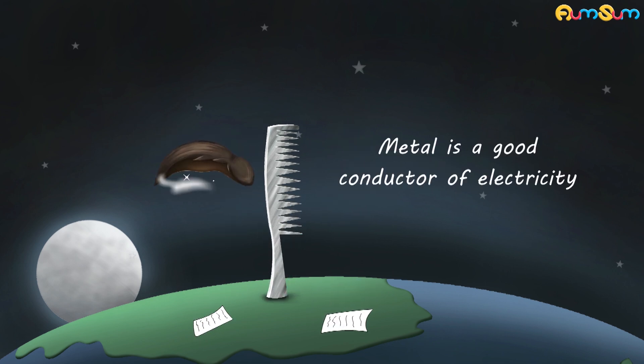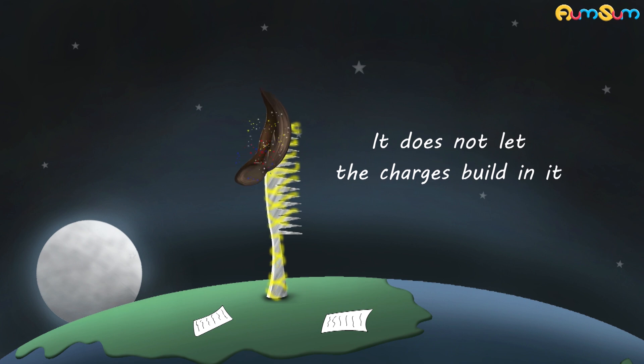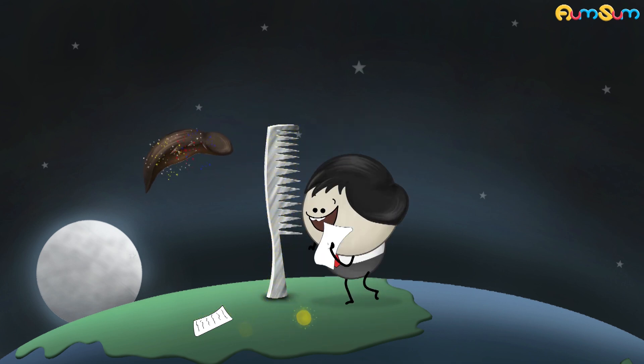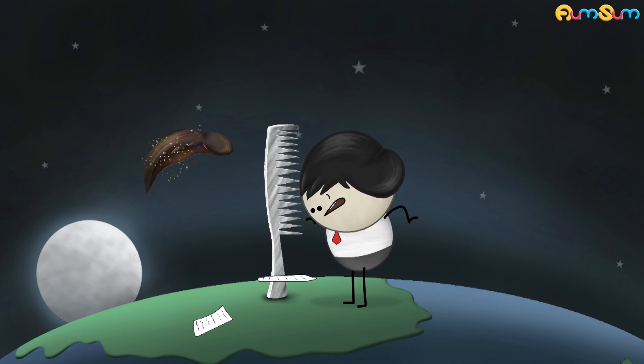However, metal is a good conductor of electricity. It does not let the charges build in it. It allows the electric charges to flow through it onto the earth. Thus, not allowing the metallic comb to get electrically charged. As a result, the metallic comb does not attract the pieces of paper.